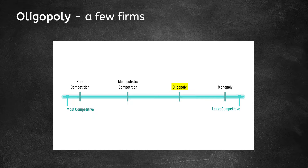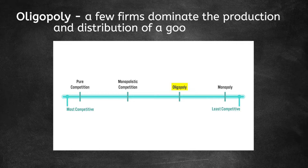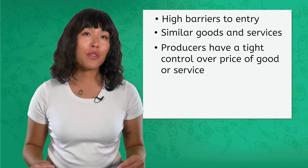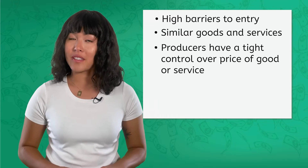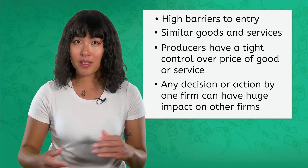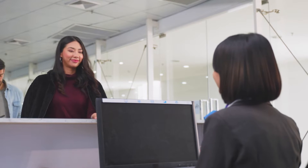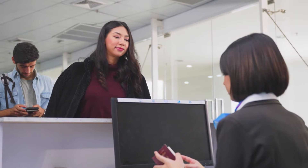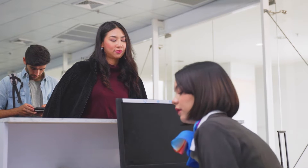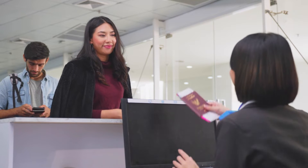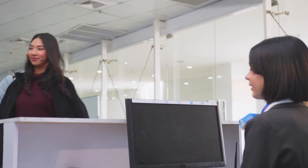In oligopoly, there are a few firms that dominate the production and distribution of a good or service. In this structure, there are high barriers to entry. Firms sell similar goods and services, and producers have tight control over the price of that good or service. However, any decision or action by one of the firms can have a huge impact on other firms. Take airlines as an example. It takes a lot of resources to start an airline, so there are only a few in the country. Each airline can basically set the price of a ticket however they want, but if one airline suddenly drops fares for an entire summer, other airlines may be forced to do the same in order to compete.